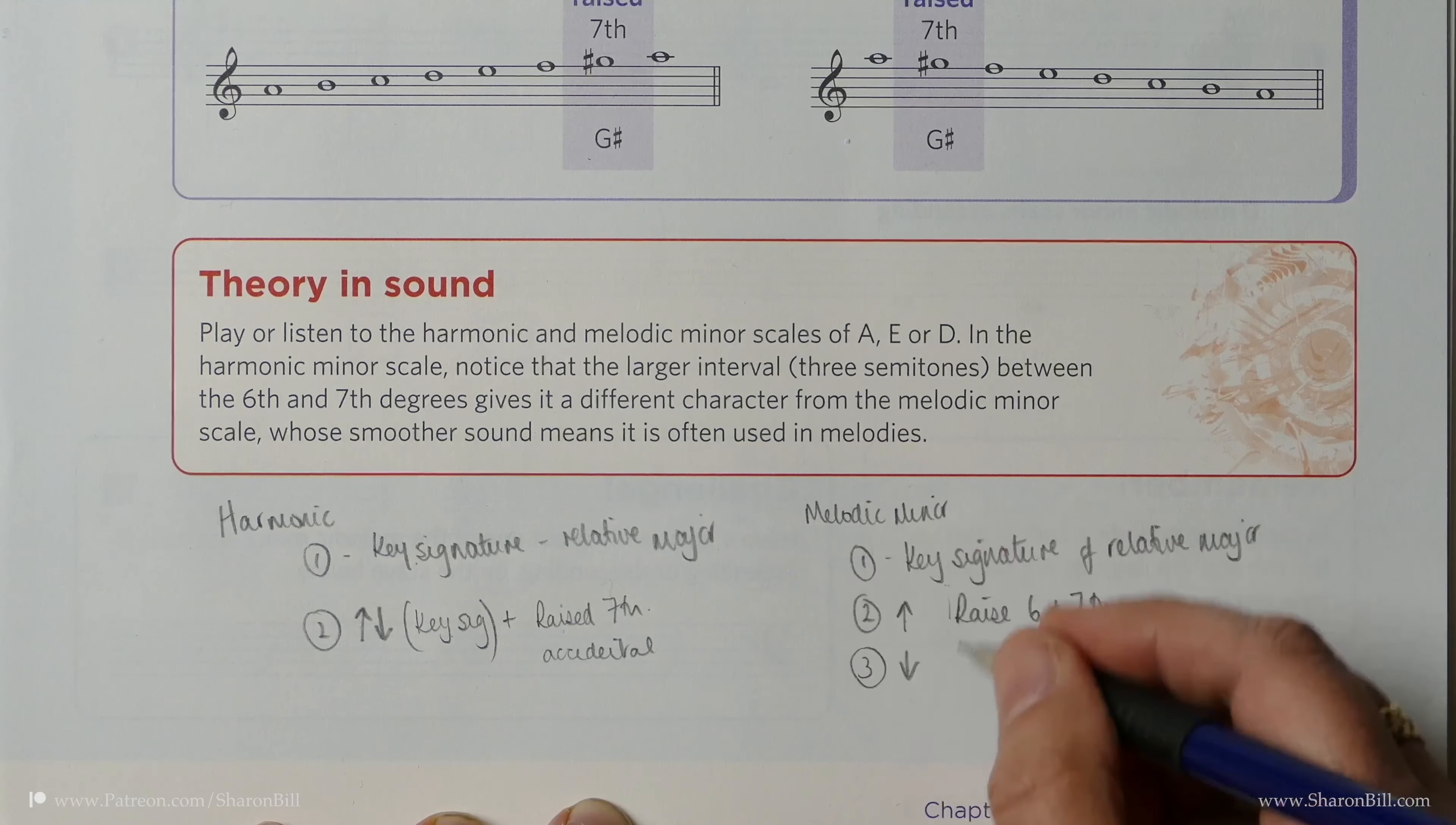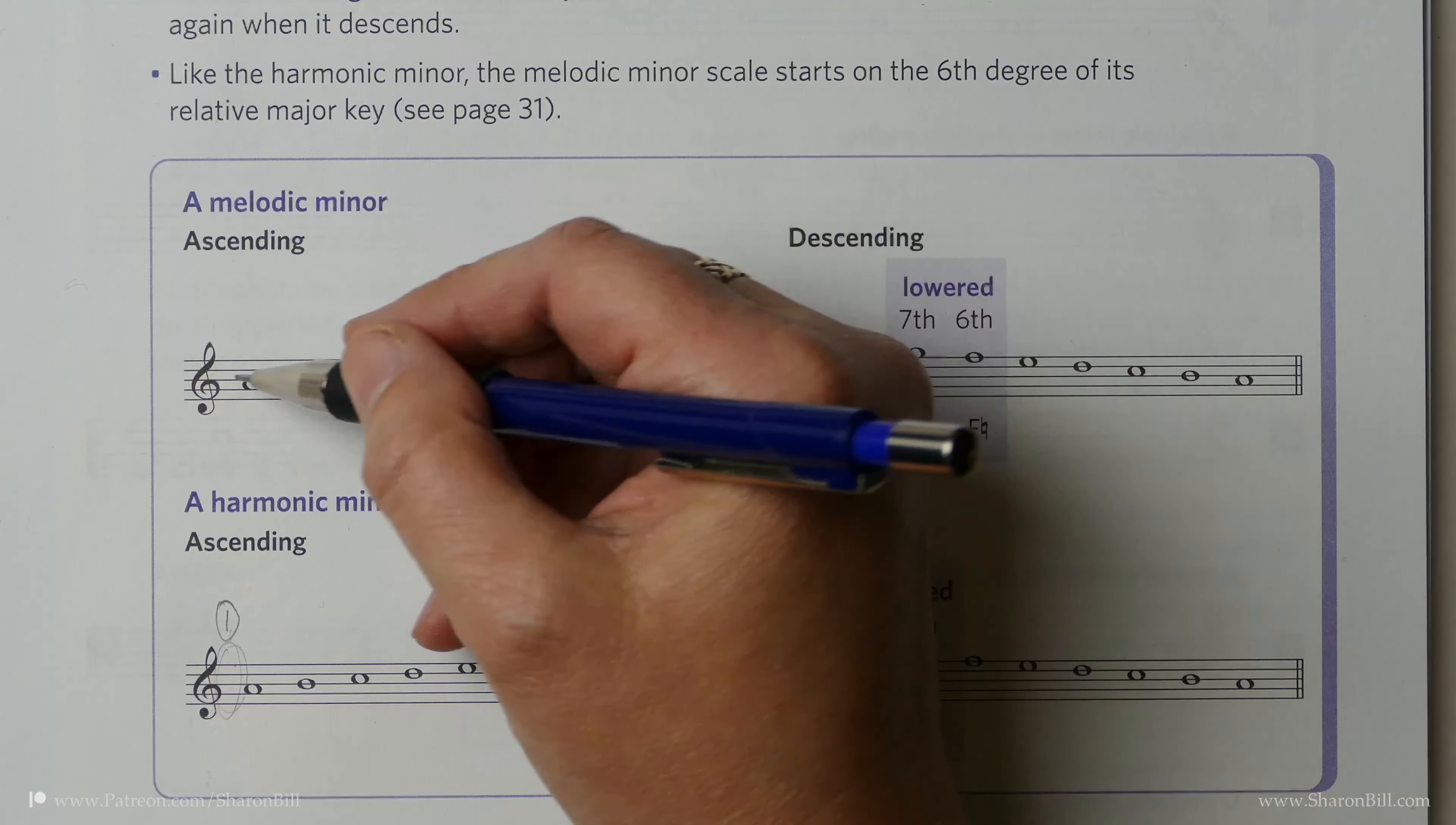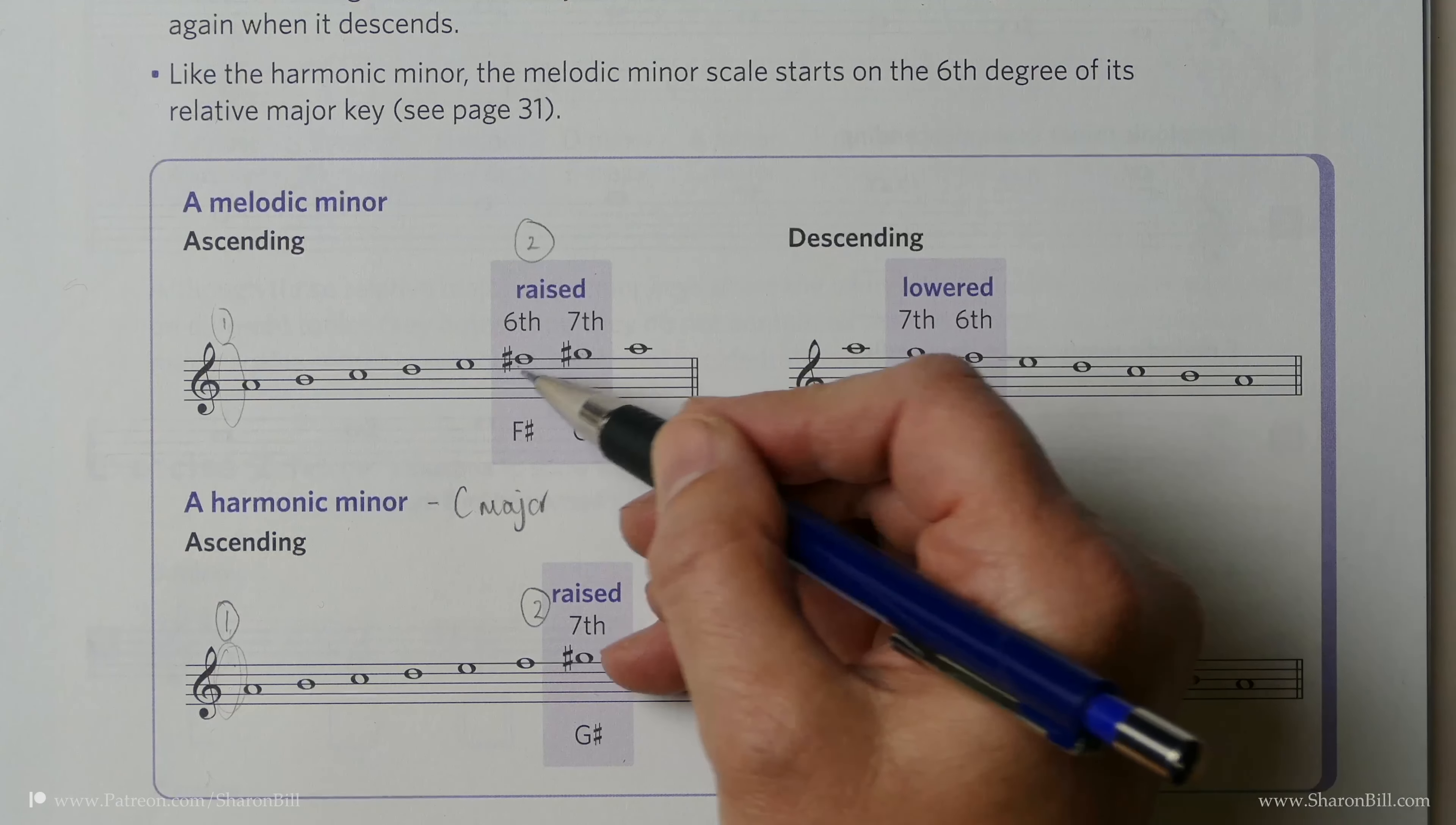And then coming back down, it's the key signature only again. So we have the key signature, generally speaking. Going up, we have the key signature plus the raised sixth and seventh. Coming down, we have the key signature only. So there's Step 1, and then Step 2 we raise the sixth and the seventh as accidentals.